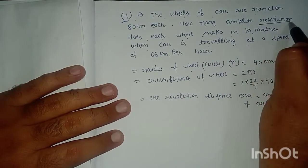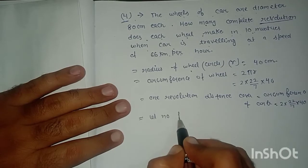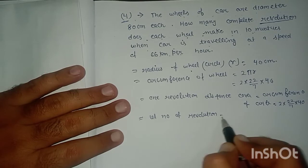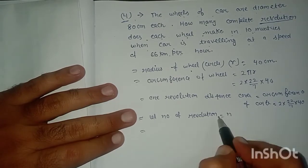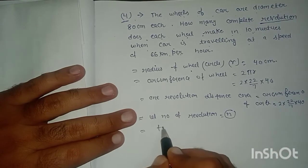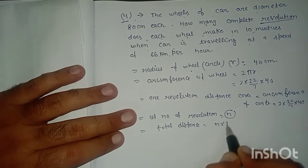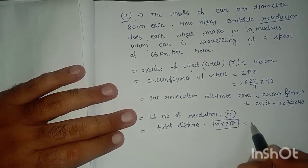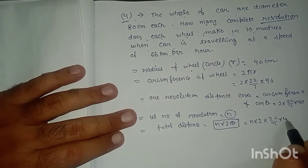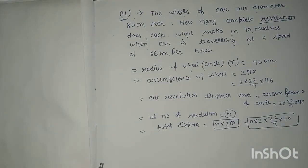Let the number of revolutions be n. The total distance covered equals n × 2πr, which is n multiplied by 2 × 22/7 × 40.